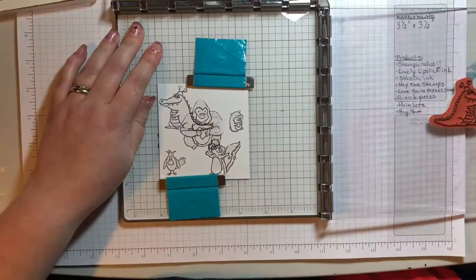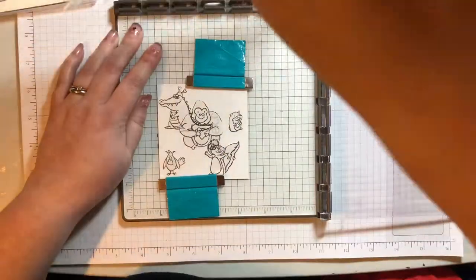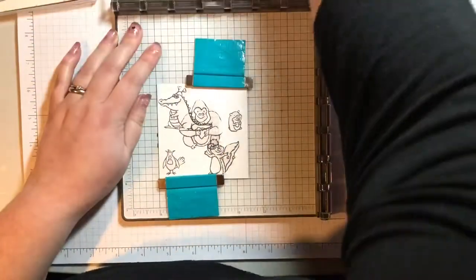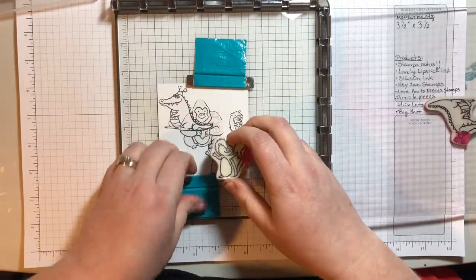Now I can take my plates and turn them around and use the other side of the plates to mount the other images. So here's my skunk.